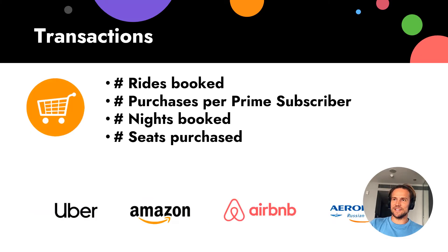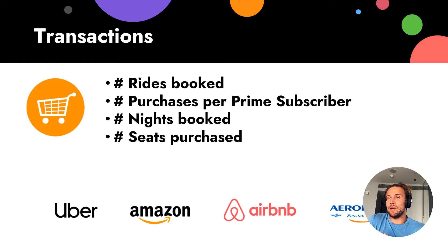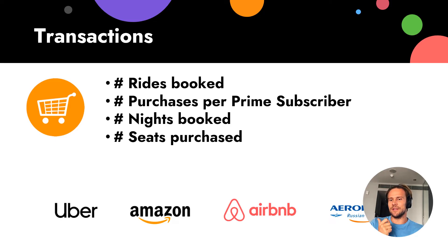Transaction products focus on regular repeated transactions. Take Uber — we don't use it every day necessarily; sometimes 12 times a day, sometimes not for five days. So their metric is rides booked — not how many times we opened the app or how fast we did it, but how many rides were booked.